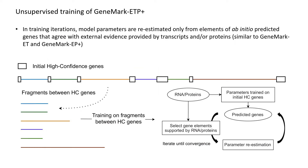Let's take a closer look at the statistical model training, which is important for predicting genes without strong external support. The model parameters are first estimated from the initially selected high-confidence genes. Depending on the amount and quality of the external evidence, this might not be a large enough set to train a reliable model. Therefore, the model is further refined by rounds of iterative self-training. In each training iteration, genes are predicted in the fragments between high-confidence genes, and the model parameters are then re-estimated based on ab initio predicted gene elements that are in agreement with the external transcriptomic or proteomic evidence. This self-training is repeated until convergence.